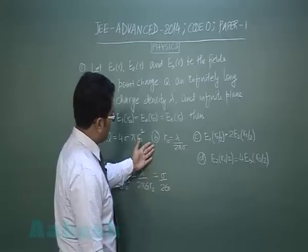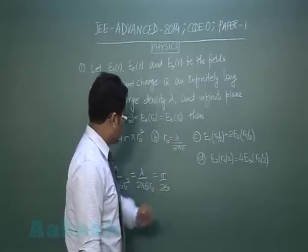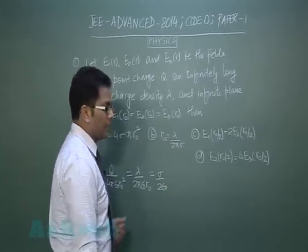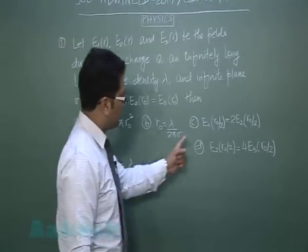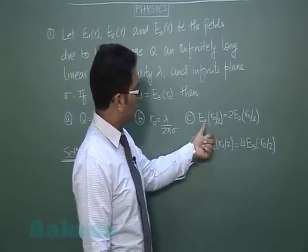Option B relates λ with σ using the second and third relations. That is incorrect.